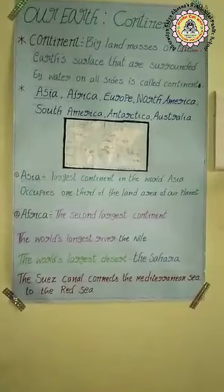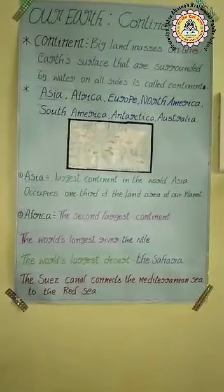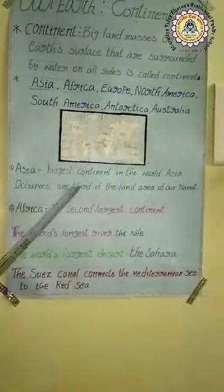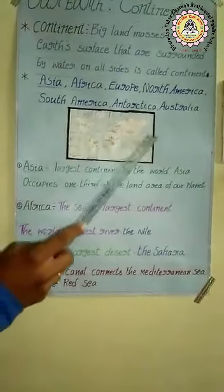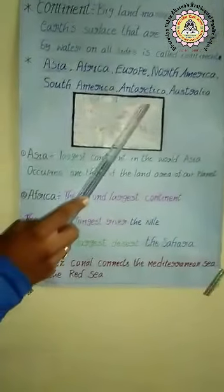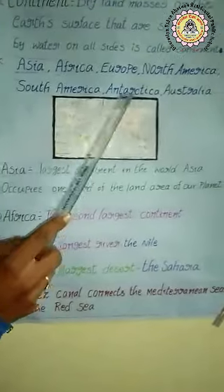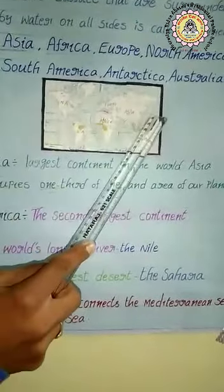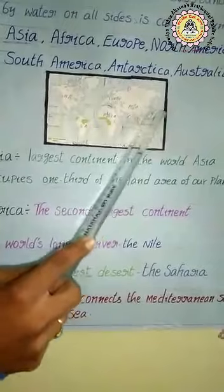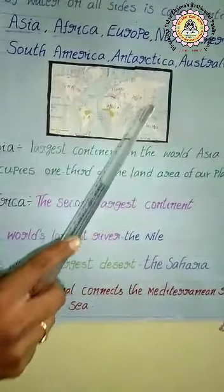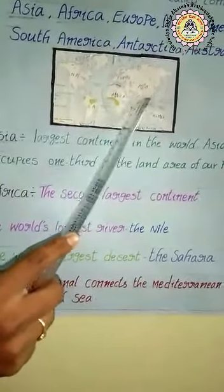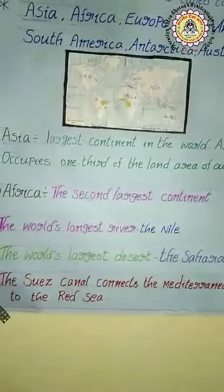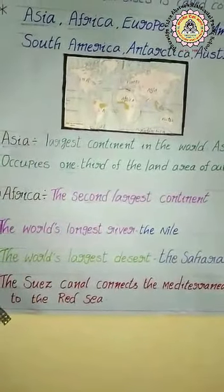There are oceans on three sides of this landmass. To the north side of Asia, we have the Arctic Ocean. To the eastern side of Asia, we can see the Pacific Ocean. On the southern side of Asia, we have the Indian Ocean. So three sides have water bodies for the Asian continent.